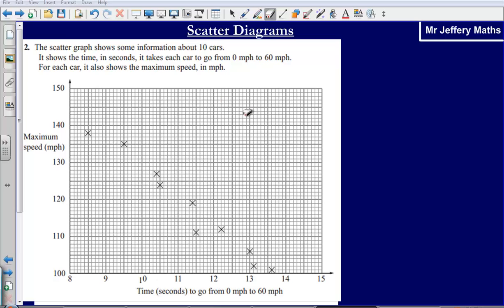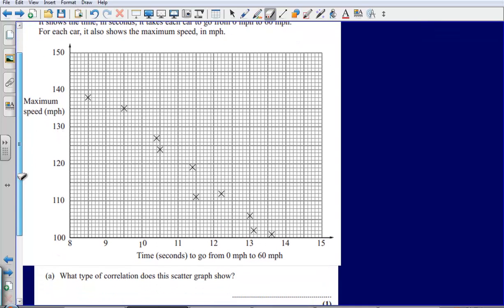Welcome to a video taking a look at scatter diagrams. Here we are given a scatter diagram which shows the maximum speed of some cars and the time in seconds to go from zero miles per hour to sixty miles per hour. What we are asked first is what type of correlation does this scatter graph show.